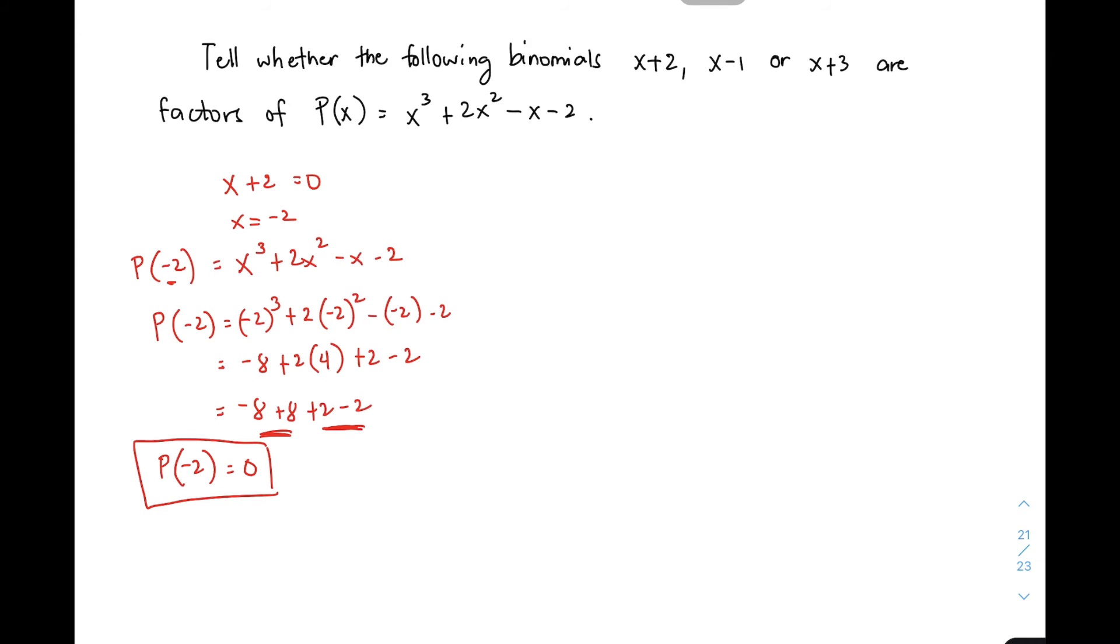Simplify natin, this is negative 8 plus 8 plus 2 minus 2. Mapansin nyo, magiging 0 na ito. Automatic, your p of negative 2 is equal to 0. Ano ibig sabihin yan? Ang ibig sabihin yan is that the remainder is 0. So kung 0 ang remainder mo, automatic, x plus 2 is a factor.